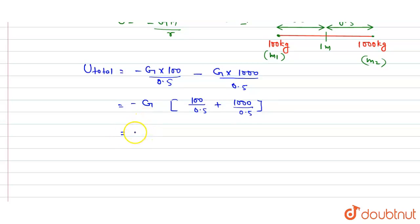We put the value of capital G, so this becomes 6.67 × 10^-11 divided by 0.5, with 100 + 1000. This can be written as -6.67 × 10^-11 / 0.5 × 1100.